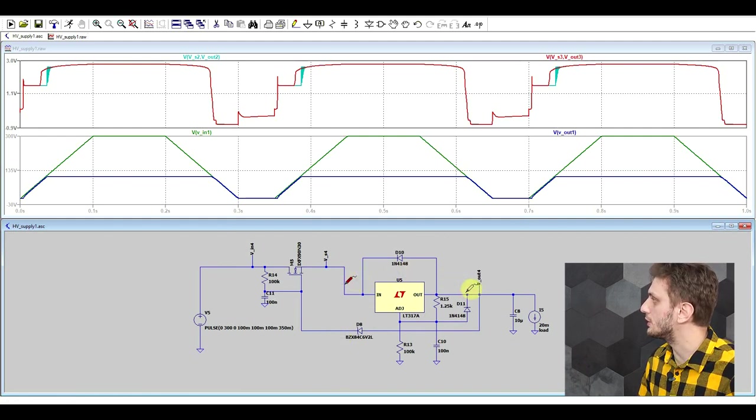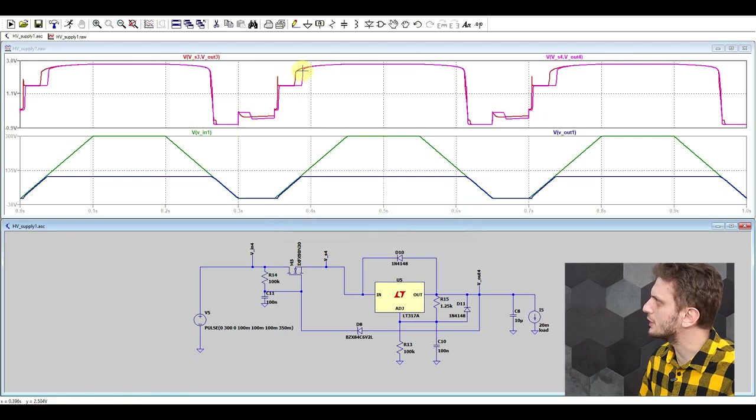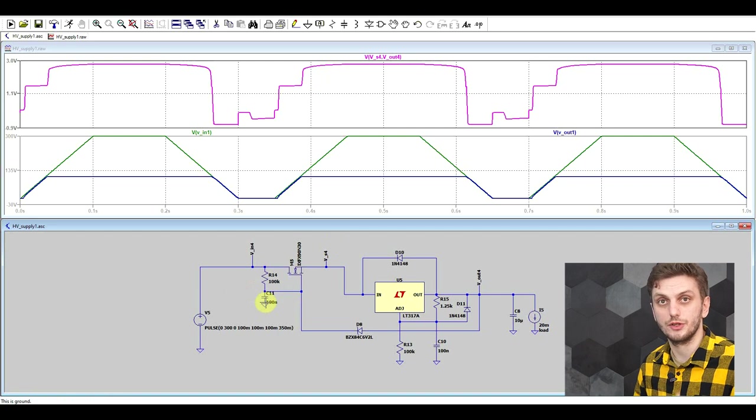If we check now the voltage drop on the 317, and we just remove these other two, we can already see that it's much much cleaner. We don't really have a lot of these jumps anymore. It's all much smoother thanks to the extra capacitor in the first transistor.